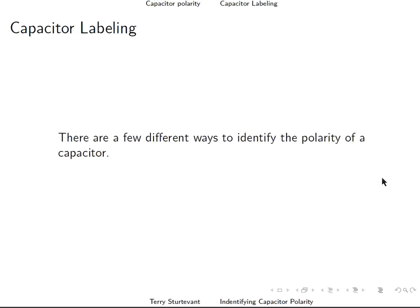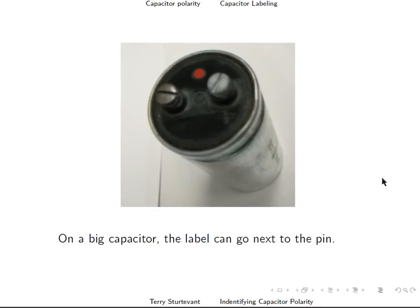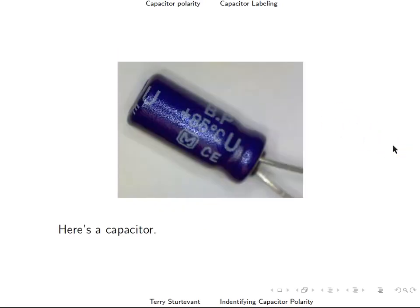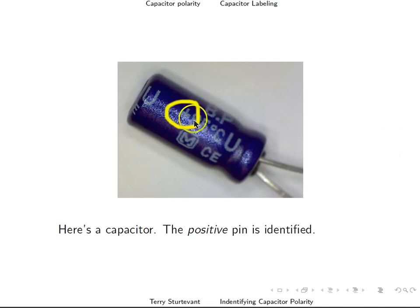Capacitors are labeled in different ways. On a big capacitor, the label can go next to the pin. Here you see the plus sign next to the positive pin. Here's another capacitor — notice there's a positive sign here, so the pin that's closest is the positive pin.